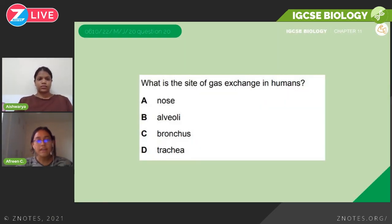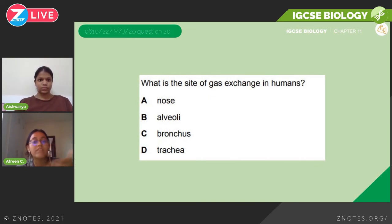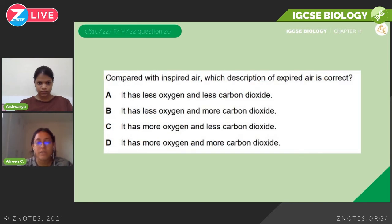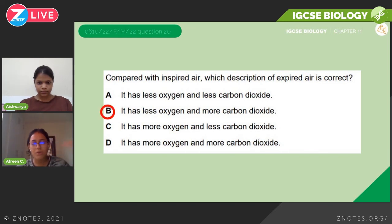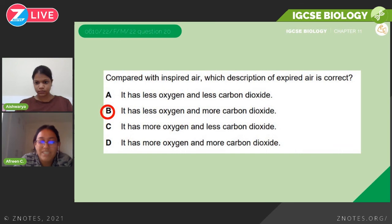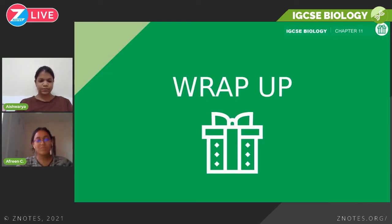Now let's look at some exam questions. May/June 2020: 'What is the site of gas exchange in humans?' The obvious answer is alveoli. Next question, February/March 2022: 'Compared with inspired air, which description of expired air is correct?' Option A: less oxygen and less carbon dioxide — it does have less oxygen, but not less carbon dioxide. Option B: less oxygen and more carbon dioxide — yes, that's the correct answer. Always read through all options even if one seems obvious, as overconfidence isn't always helpful. And that was chapter 11, gas exchange in humans.